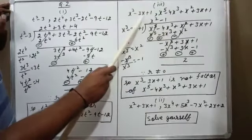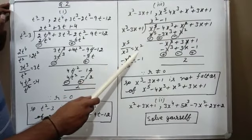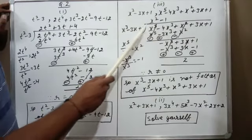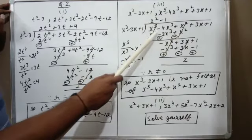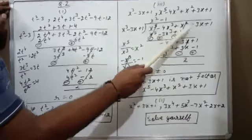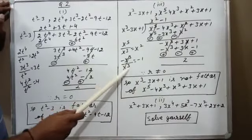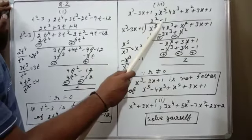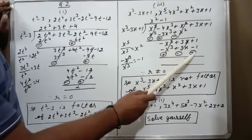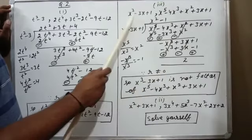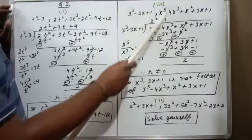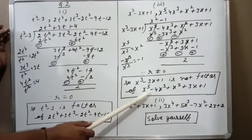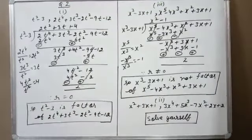For part three, the dividend is x⁵ minus 4x³ + x² + 3x + 1 and the divisor is x³ minus 3x + 1. Dividing x⁵ by x³ gives x². Multiply x² by the divisor to get x⁵ minus 3x³ plus x²; after sign change the first value cancels giving minus x³. Divide minus x³ by x³ to get minus 1; multiply minus 1 by divisor: minus x³, plus 3x, minus 1; after sign change these cancel. The remainder is 2, which is not 0. So we say x³ minus 3x + 1 is not a factor of x⁵ minus 4x³ + x² + 3x + 1. The second part you will solve yourself. This chapter is now complete.